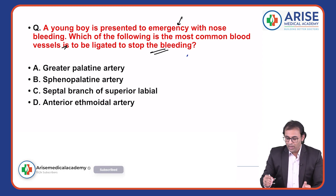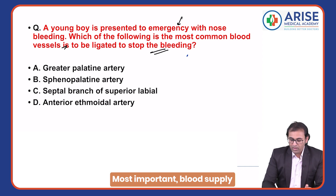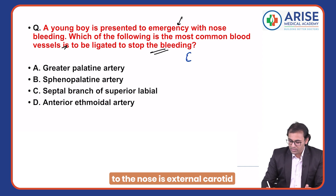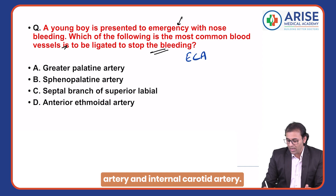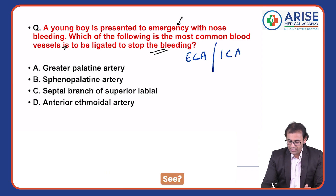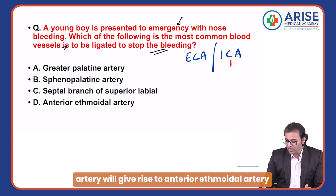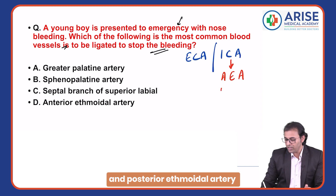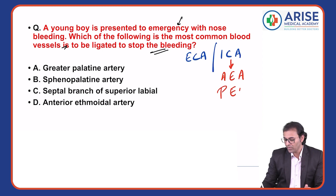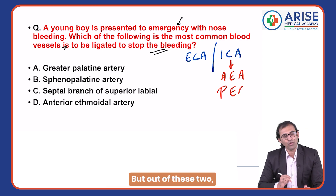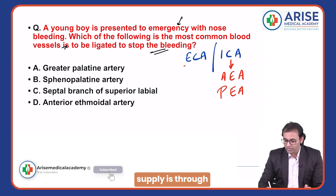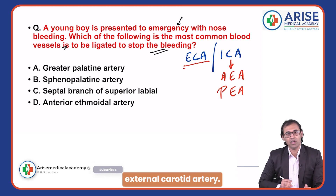The most important blood supply to the nose is from the external carotid artery and internal carotid artery. The internal carotid artery gives rise to the anterior ethmoidal artery and posterior ethmoidal artery. But out of these two, the main blood supply is through the external carotid artery.